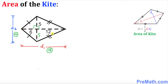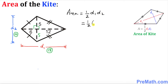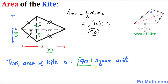In our case, d1 is 18 because 6 plus 12 makes 18, and d2 is 10 because 5 plus 5 makes 10. So the area is one-half times 18 times 10. Simplifying, that gives us 90. Thus the area of the kite turns out to be 90 square units.